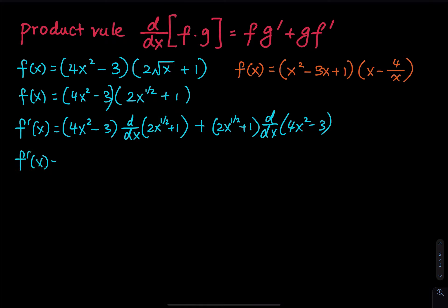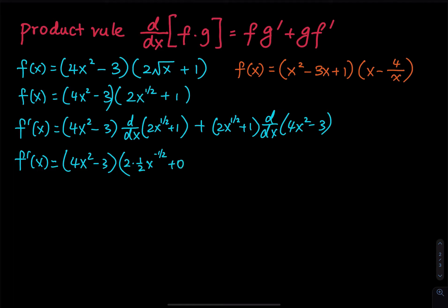Computing f prime: we have 4x squared minus 3, and then we bring the one-half down, so that is 2 times one-half giving us 1, and then one-half minus 1 is negative one-half. The derivative of 1 is 0. Then copy the second factor 2x to the one-half plus 1, and the derivative of 4x squared gives us 8x to the 1, and the derivative of 3 is 0.